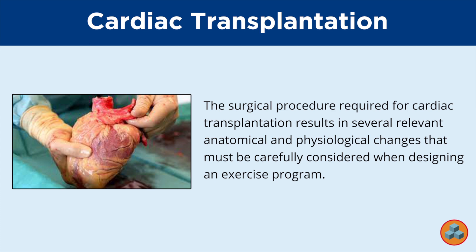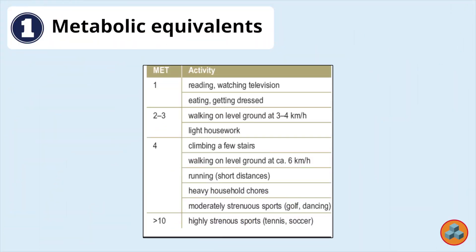Let's explore each of the options. Option 1: Metabolic Equivalence. Metabolic equivalents (METs) are not an objective means of monitoring exercise intensity, although they may be useful to select appropriate exercise activities. Once the patient's appropriate MET levels for exercise are determined, activities with the desired aerobic requirement can be selected from a published table of MET values.